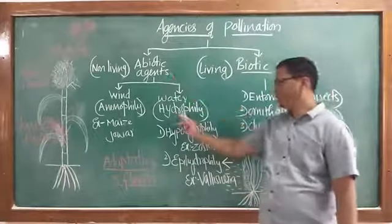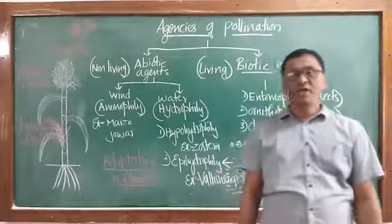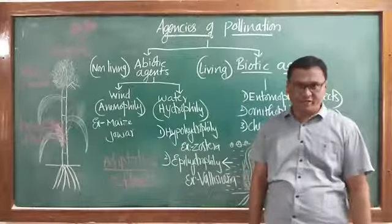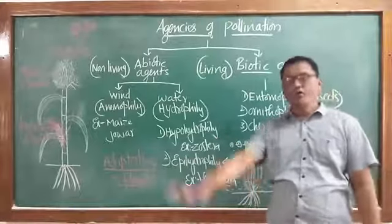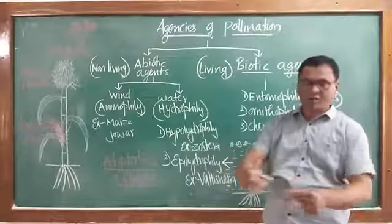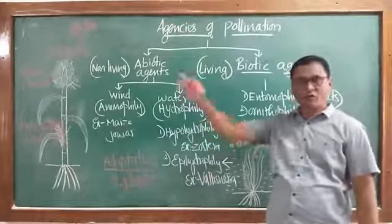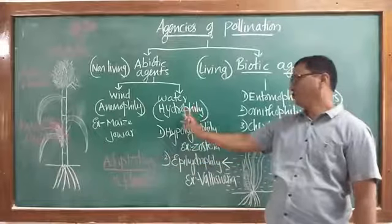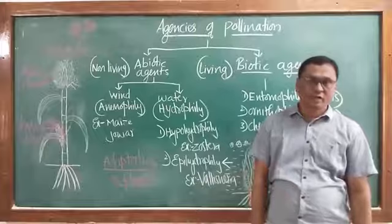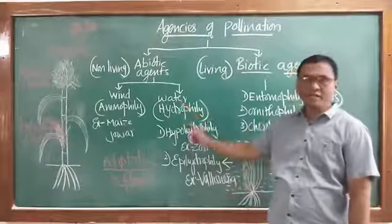Another abiotic agent is water. The pollination brought about by the agency of water is known as hydrophily. Hydrophytes — plants that grow within the water — show hydrophily, where transfer of pollen grains to the stigma is brought about by the current or flow of water.